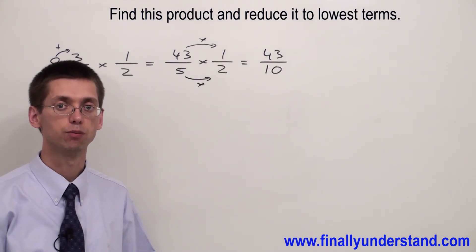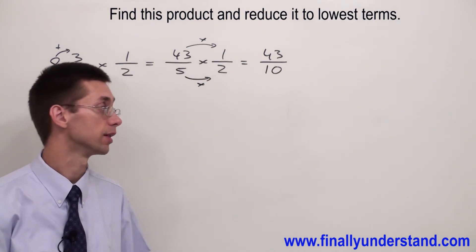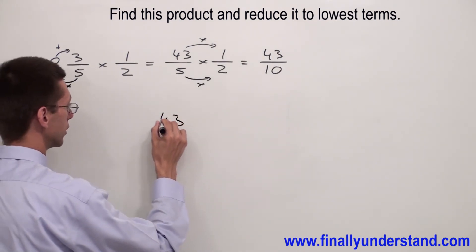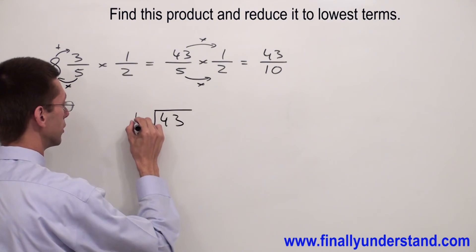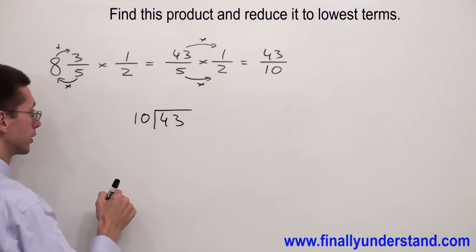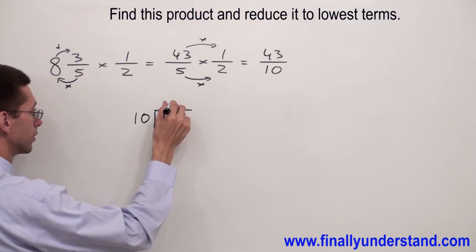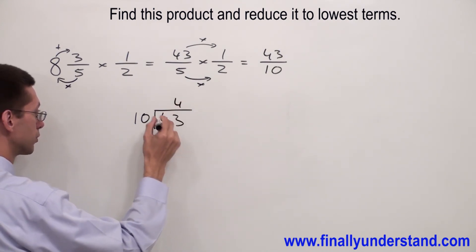Most of the time we convert improper fractions to mixed numbers, simply by dividing 43 by 10. The question is, how many times does 10 go into 43? 4 times. 4 times 10 is 40.